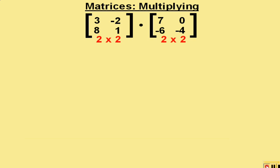Here we have two 2 by 2 matrices where the first number in the dimension is the row and the second is the column. The column number of the first matrix must match the row number of the second matrix in order for the two to be multiplied.